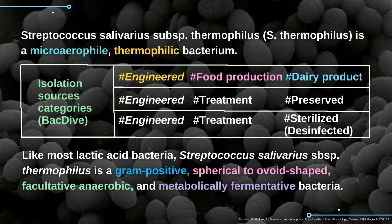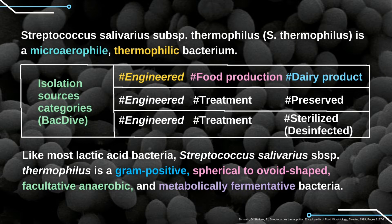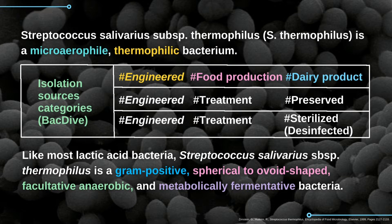Like most lactic acid bacteria, Streptococcus salivarius subspecies thermophilus is a gram-positive, spherical-to-ovoid-shaped, facultative anaerobic and metabolically fermentative bacterium.